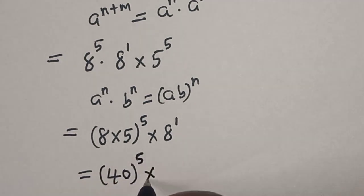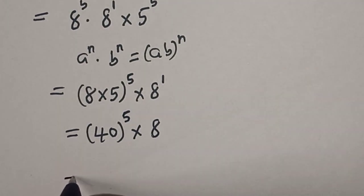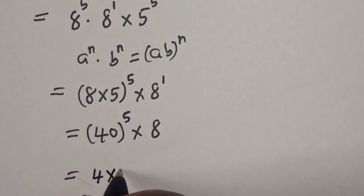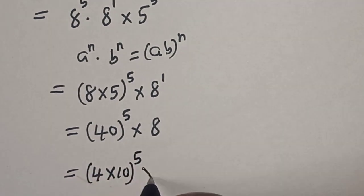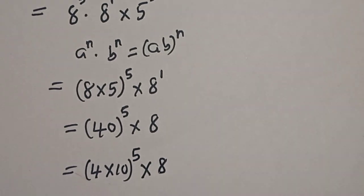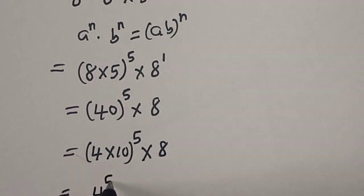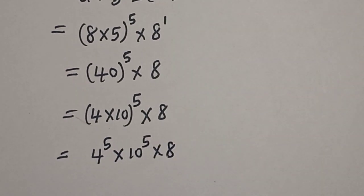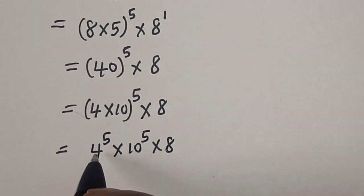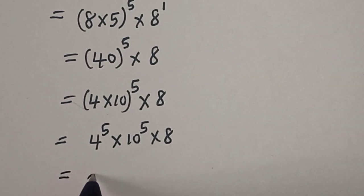8 times 5 is equal to 40, so we have 40 to the power of 5 multiplied by 8. Then 40 is also 4 times 10, so this is equal to 4 times 10 raised to power 5, multiplied by 8. This gives us 4 raised to power 5 multiplied by 10 to the power of 5, multiplied by 8.